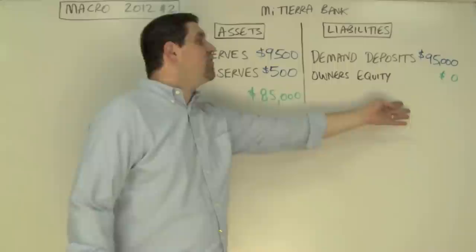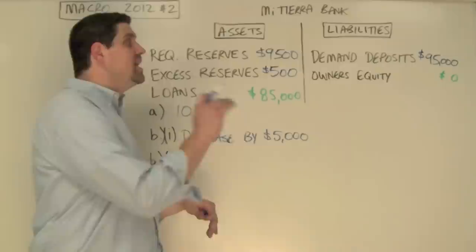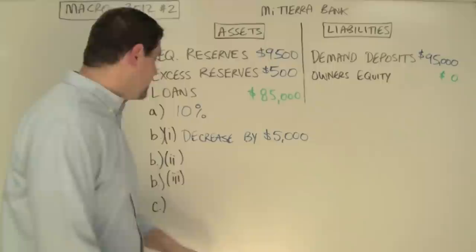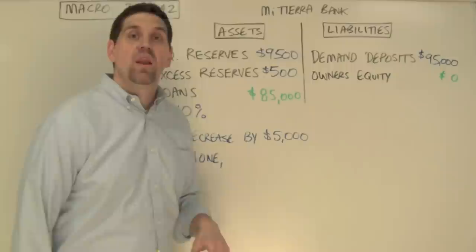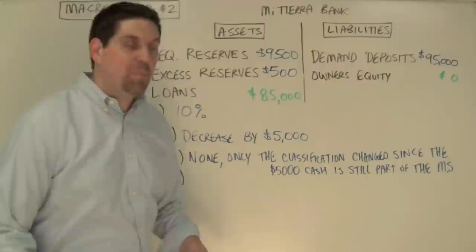B2 is kind of tricky. It says what's the initial effect on the total money supply when there's a decrease of $5,000? Well, the initial effect — there is none. You might want to say there's a decrease of $5,000 in the money supply, but no. Remember, money in demand deposits and money in cash is still part of the money supply. This is an explained question, so you have to explain why: only the classification changed because the $5,000 cash is still part of the money supply.